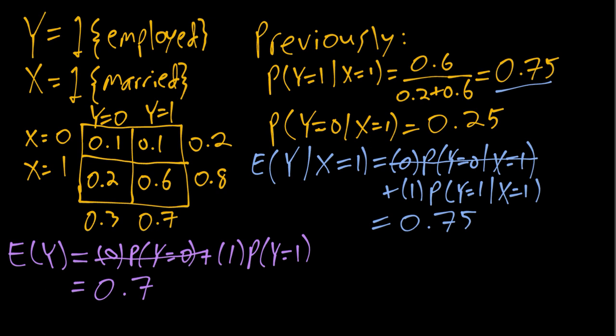So in this case we can see that if we look at the population as a whole unconditionally there's a 0.7 probability of employment or 70% employment. Whereas when we restrict our attention to only married individuals, there's a slightly higher 75% employment probability.